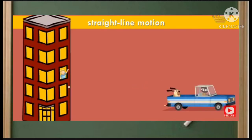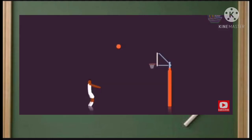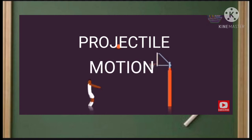Imagine a car moving on a straight line motion, a ball falling from a tall building, and a basketball player throwing the ball into the net. These are called projectile motion.